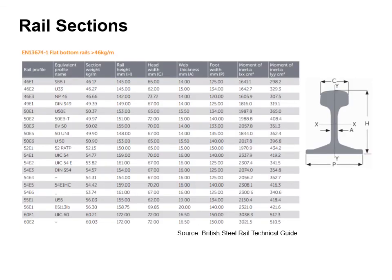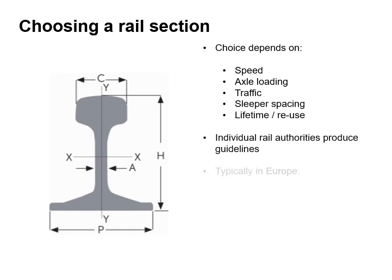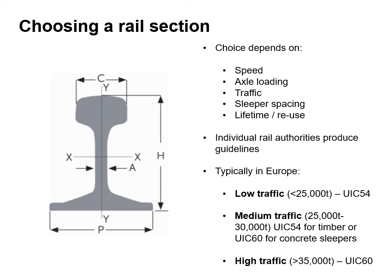The table shown is an extract from the British Steel Rail Technical Guide on EN 13674 Part 1, flat bottom rails greater than 46 kilograms per metre. The choice of rail section depends on speed, axle loading, traffic, sleeper spacing and life expectancy of the rail section. Individual rail authorities produce their own guidelines. Typically in Europe, a low traffic railway would use UIC 54; medium traffic UIC 54 for timber sleepers or UIC 60 for concrete sleepers; and for highly trafficked railways, UIC 60.